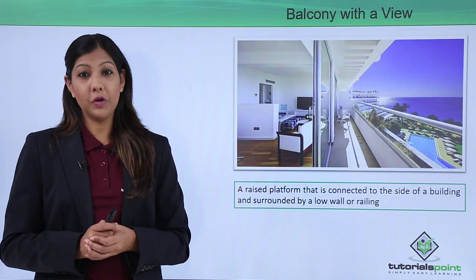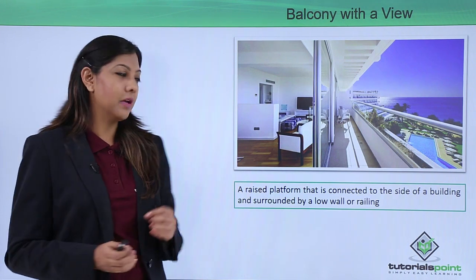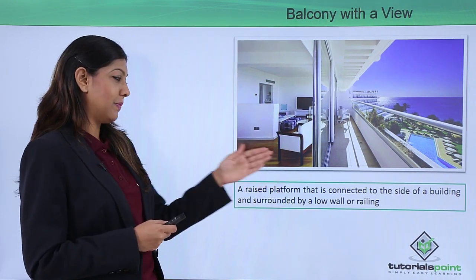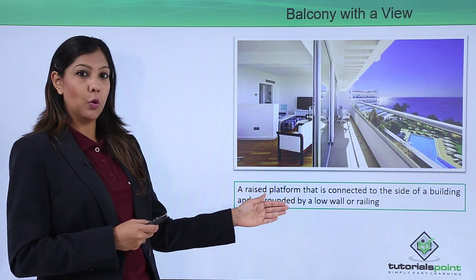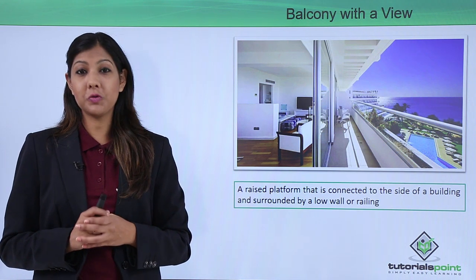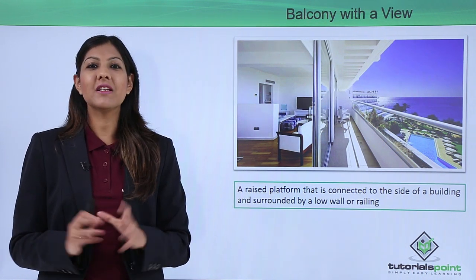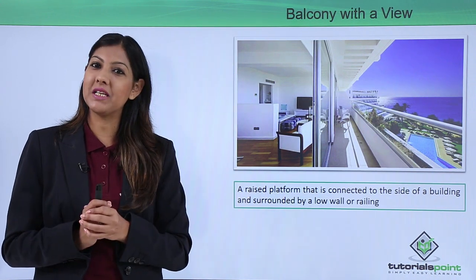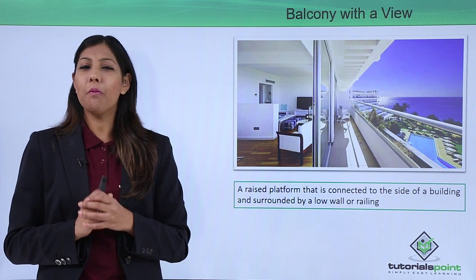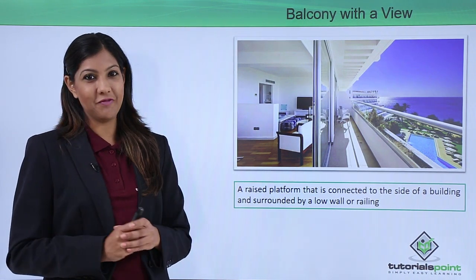Most hotels also provide you a balcony with a view. A balcony is a raised platform connected to the side of a building and surrounded by a low wall or railing. A balcony is definitely an added advantage because when you are holidaying with your loved ones you want to have a nice view of the scenic beauty in and around that particular city, and hence most guests prefer to have a room with a good balcony view.